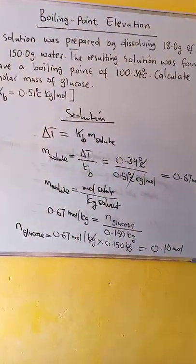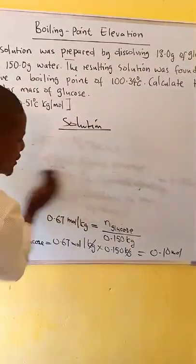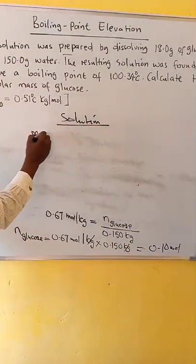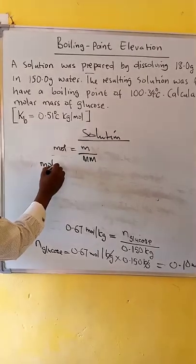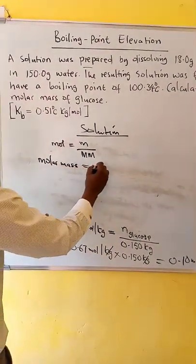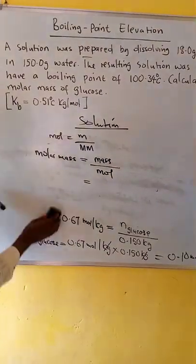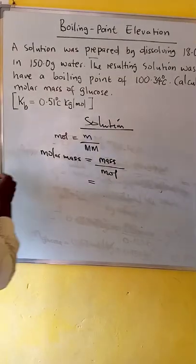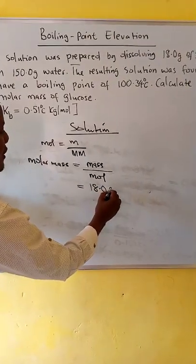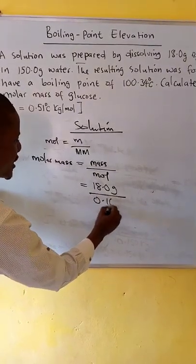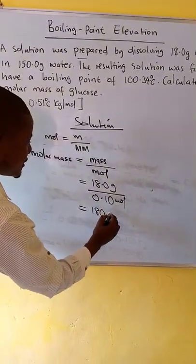Now we use the number of moles of glucose to calculate the molar mass. We know that moles equals mass over molar mass. We make molar mass the subject: molar mass equals mass over moles. In this case, the mass of glucose given is 18.0 grams, and the moles calculated is 0.1 mol. When we divide, we get 180 grams per mol.